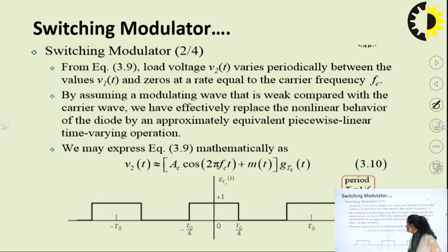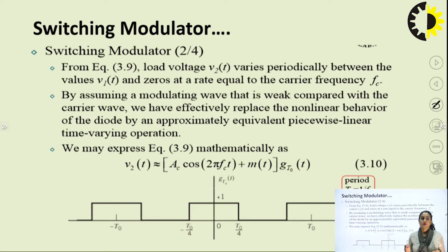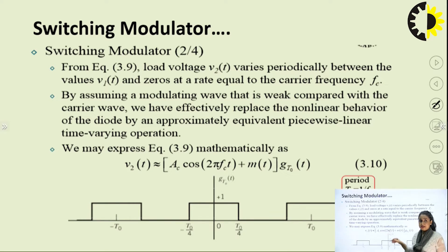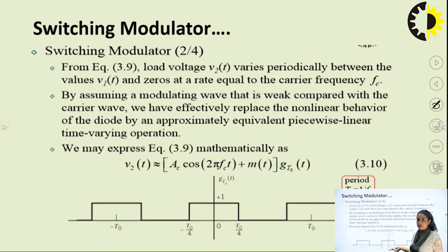By assuming the modulating wave is weak compared to the carrier wave, we have effectively replaced the non-linear device with a switch. We replace the non-linear behavior of the diode by an approximately equivalent piecewise linear time-varying operation. This linear time-varying operation can be represented mathematically or with the help of a pulse that remains positive for the positive half cycle of the carrier and goes to 0 for the negative half cycle. V2 equals V1 multiplied by a factor g(t₀), which is a function of time.